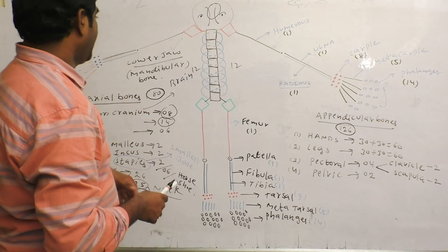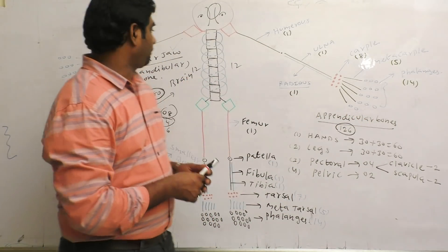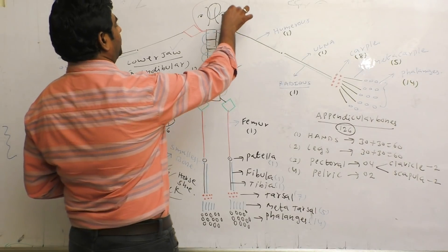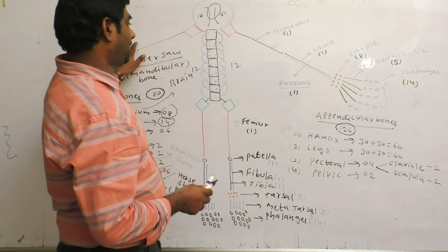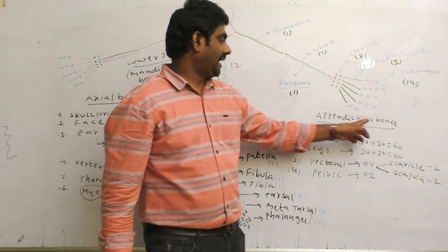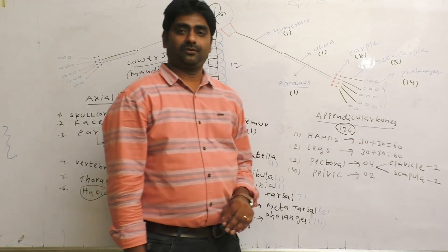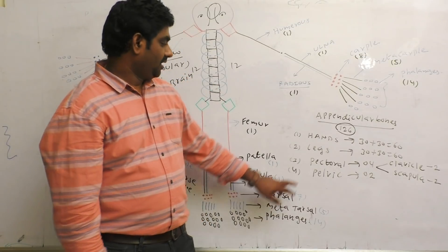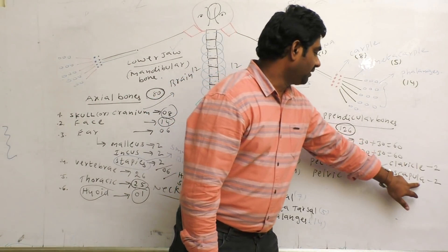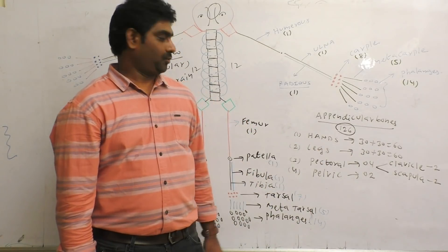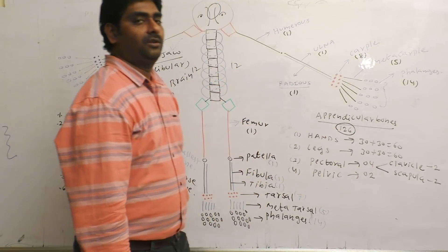These are all Axial Bones — head, face, and ears. Now, Appendicular Bones include left and right hands and left and right legs. Each hand has 30 bones, so two hands = 60 bones. Two legs = 30 + 30 = 60 bones. Pectoral (shoulder) bones: 4 — Clavicle (2) and Scapula (2). Pelvic (buttock) bones: 2. Total Appendicular Bones: 126.